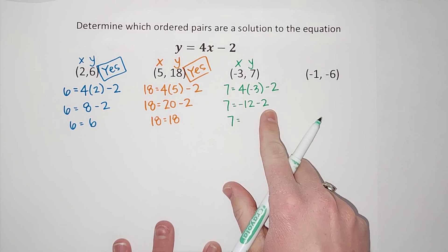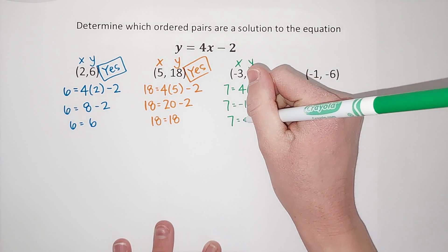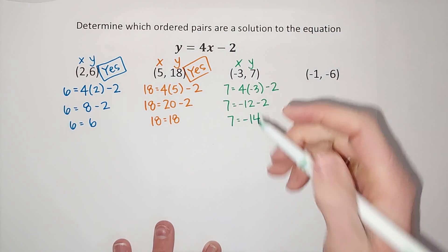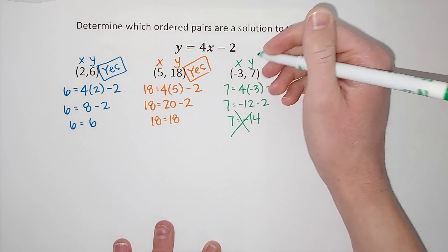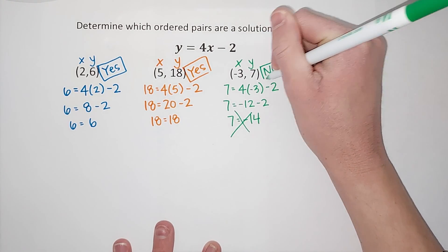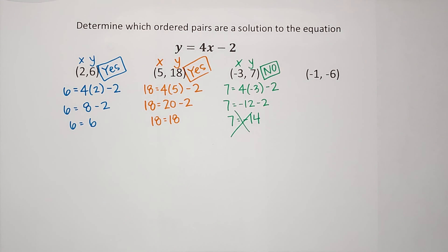That's like, I owe you $12. I borrow two more dollars. So, now I owe you $14. Alright, 7 does not equal negative 14, right? So, negative 3, 7 is not a solution for this equation. It's a solution for a different equation, but not this one.